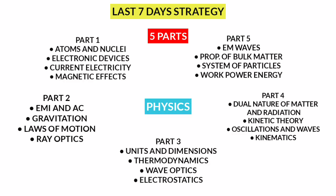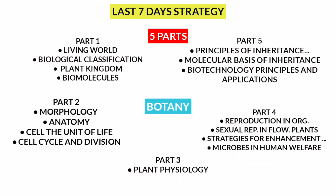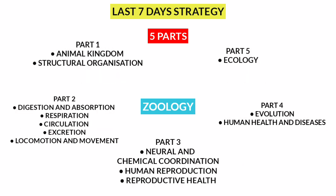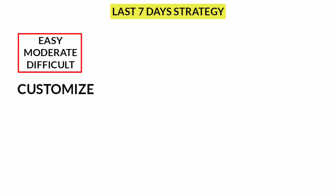We can divide each subject into 5 parts: Physics 5 parts, Chemistry 5 parts, Botany 5 parts, and Zoology 5 parts. In all parts there are easy, moderate, and difficult chapters — you can mix everything. If you are comfortable with this plan, you can follow it; if not, you can customize it.